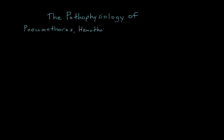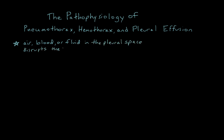So why do these conditions compromise respiratory function? In each case, the introduction of air, blood, or fluid into the pleural space disrupts the normal negative intrapleural pressure. A defect in the chest wall, for instance, will allow ambient air at relatively positive atmospheric pressure to flow into the relatively negative intrapleural space until the pressure between the atmosphere and pleural space equilibrates, resulting in a positive intrapleural pressure. Similarly, blood or fluid will naturally flow from the site of insult into the pleural space, resulting in a positive intrapleural pressure.